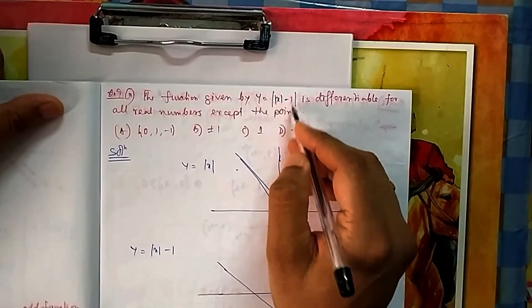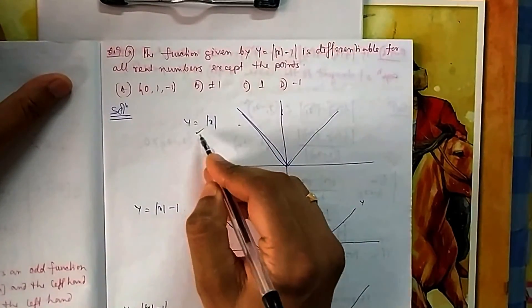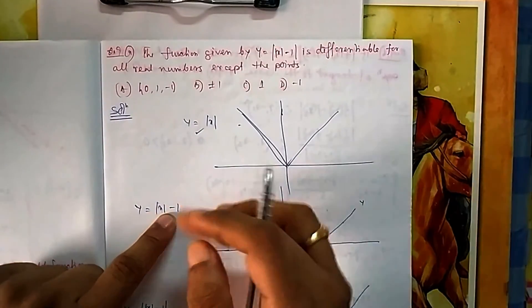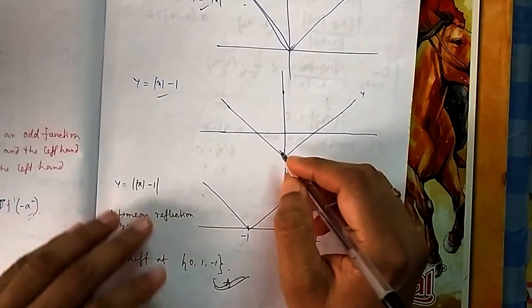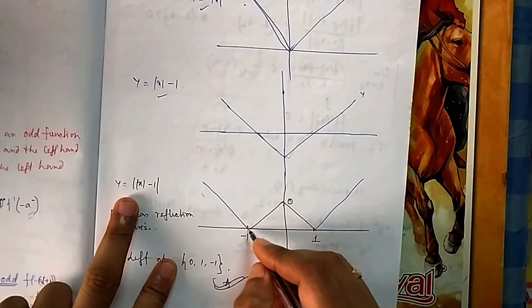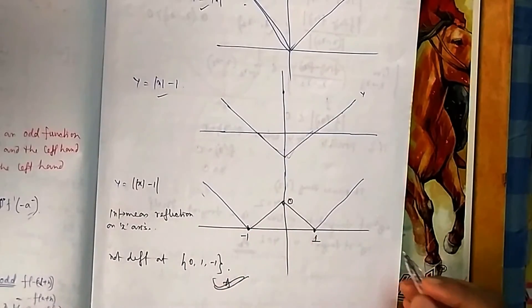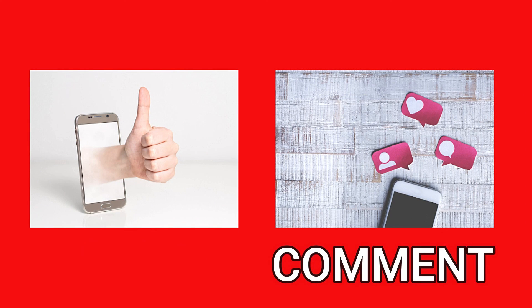For Q9a, find where y = ||x| − 1| is not differentiable. Starting from y = |x|, shifting down by 1 gives |x| − 1, which goes below the x-axis. Taking the mod of that reflects the negative portions upward. The resulting graph has sharp turns — corners — at x = −1, 0, and 1. Therefore y = ||x| − 1| is not differentiable at x = −1, 0, and 1. Answer is option A. Please like the video and leave your comments.